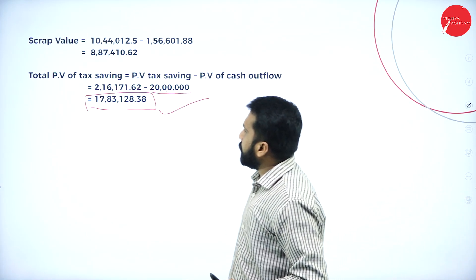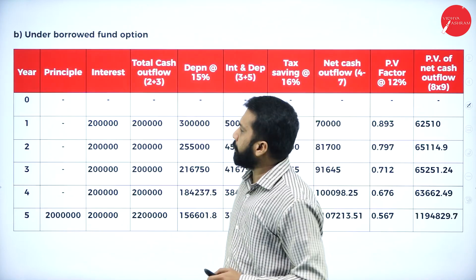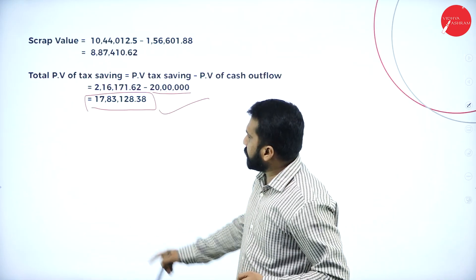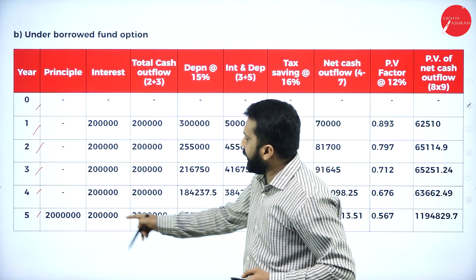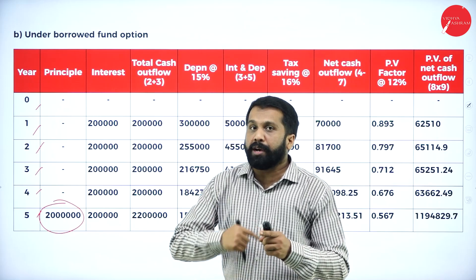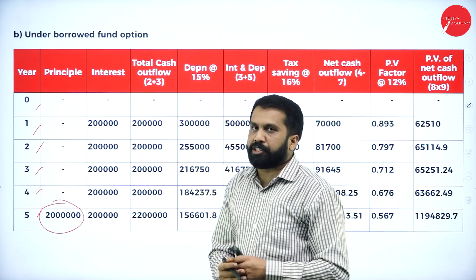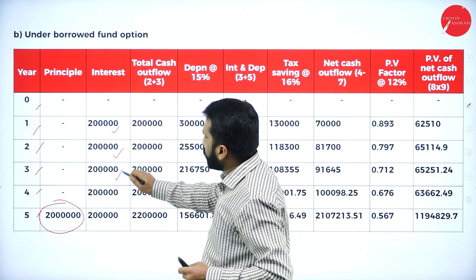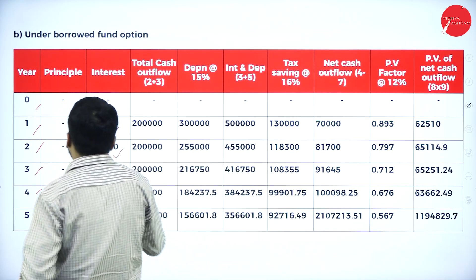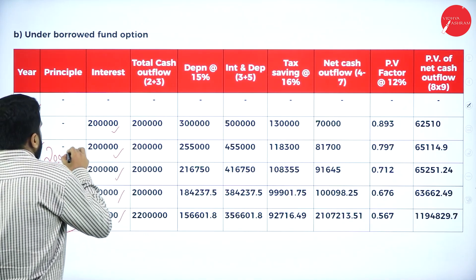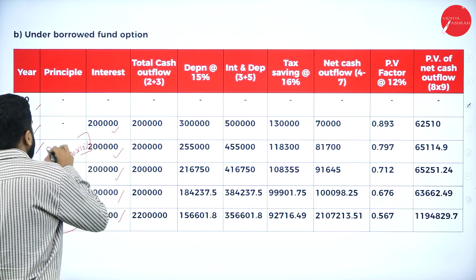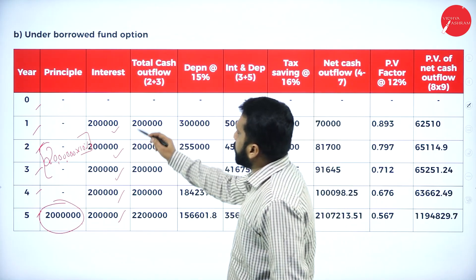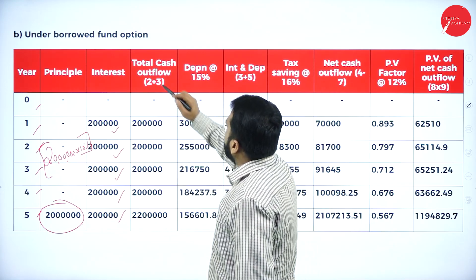Your answer is 17,83,128. Now we will go for borrowed fund. Years 0, 1, 2, 3, 4, 5. For own fund, beginning of the year you write investment. For borrowed fund, end of the year you write, because you have to repay that. What is the interest? 10%. What is the amount you have borrowed? 20 lakh. So 2 lakh interest each year. 20 lakh multiplied with 10% gives your 2 lakh value. Calculate interest, then total cash outflow.